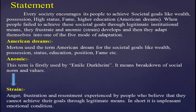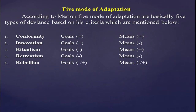So when an individual cannot achieve his dreams like higher education or wealth and status, strain develops, and then the individual will adapt to one of the five modes of adaptation. According to Merton, the five modes of adaptation are basically five types of deviance based on his criteria.